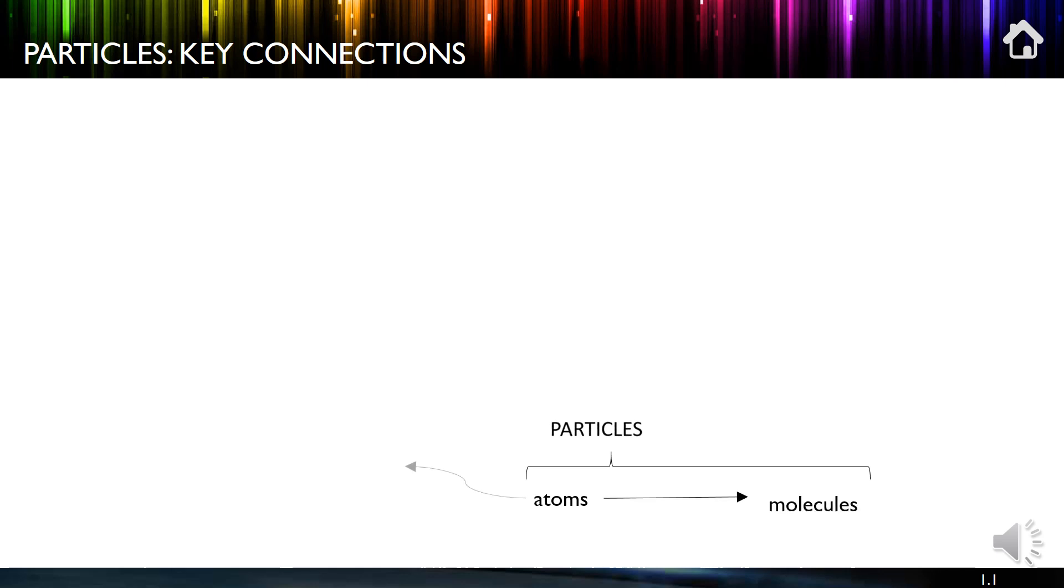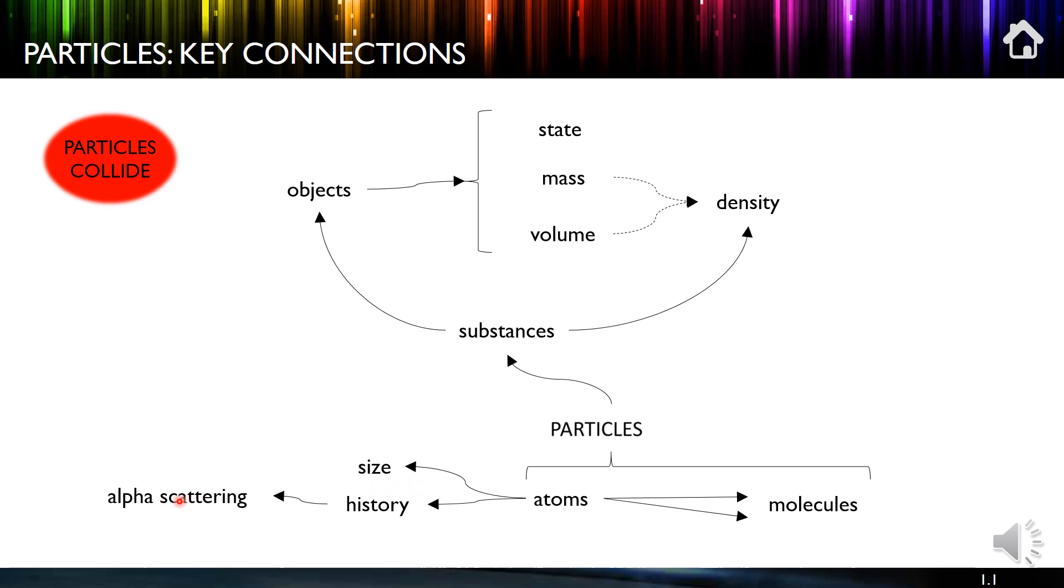So we're going to look at the history a little bit, how people's ideas changed about particles, and this experiment in particular, the alpha scattering experiment. We're going to think about the size of particles, principally how small they are. Then the key words here are atoms and molecules and the difference between those. Basically, molecules are made of atoms and they're both types of particles.